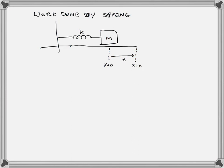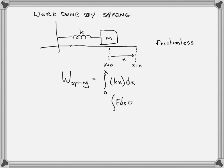Let's take a mass on a spring and get rid of gravity by putting it on a frictionless horizontal surface so the only force on it is the spring. I'm going to pull the mass from x equals 0 to x equals X and ask how much work did the spring do? The work done by the spring is the integral from 0 to X of F·ds cosine theta, where F is the magnitude kx and ds is the displacement variable dx.